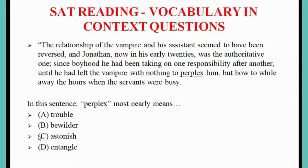The relationship of the vampire and his assistant seem to have been reversed, and Jonathan, now in his early 20s, was the authoritative one. Since boyhood he had been taking one responsibility after the other until he had left the vampire with nothing to perplex him. But how to while away hours while the servants were busy?